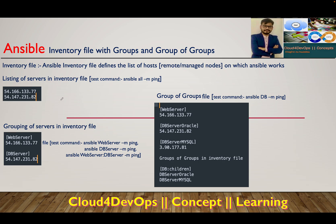Hi everyone, welcome to the fifth lecture of the Ansible series. In this lecture we will focus on inventory file with groups and group of groups. As a quick brush-up, inventory files are those files where you provide the list of hosts — basically your managed nodes on which the Ansible engine works and gets information.